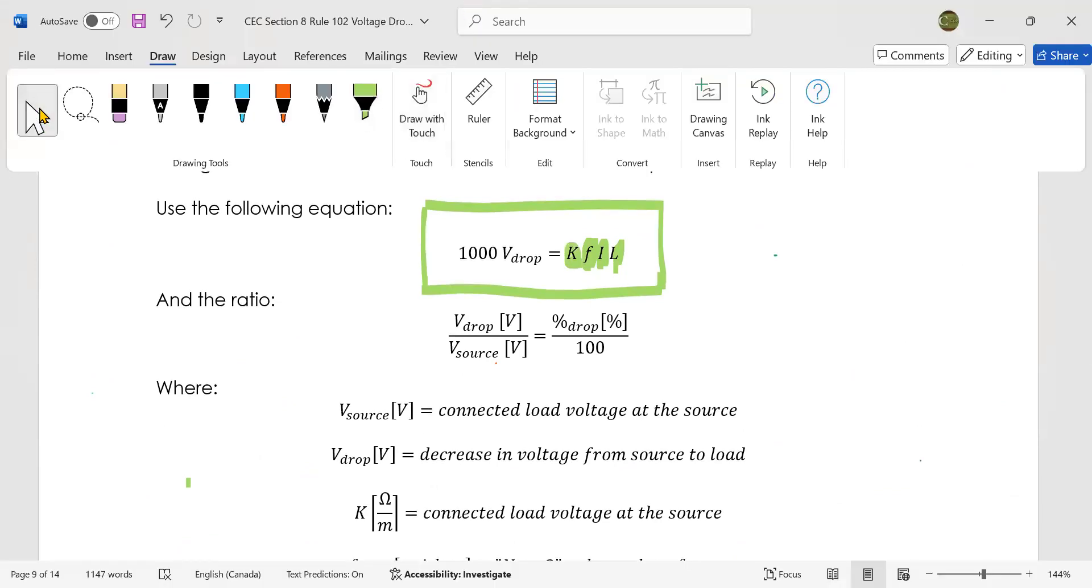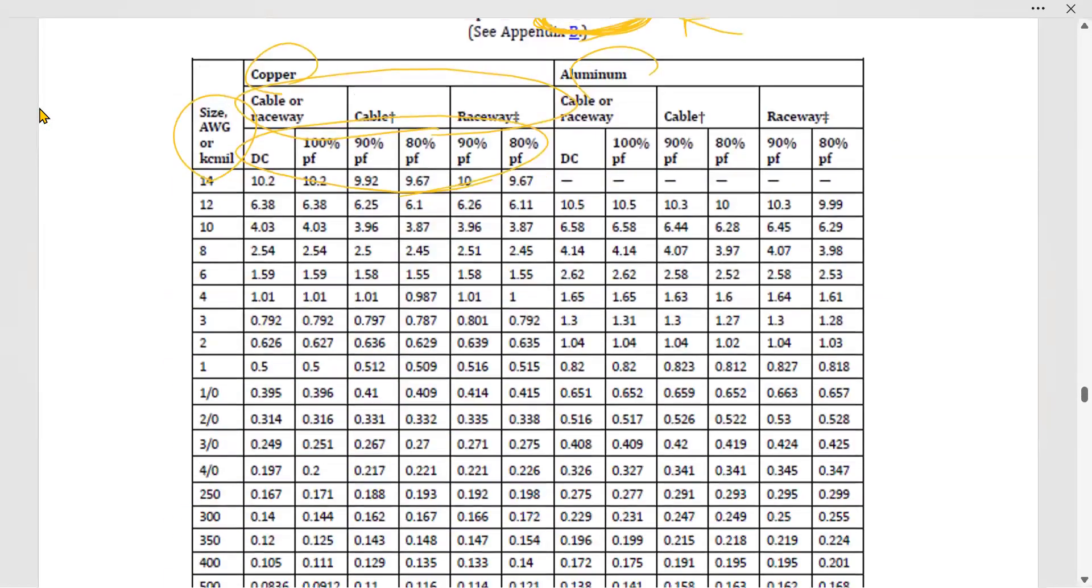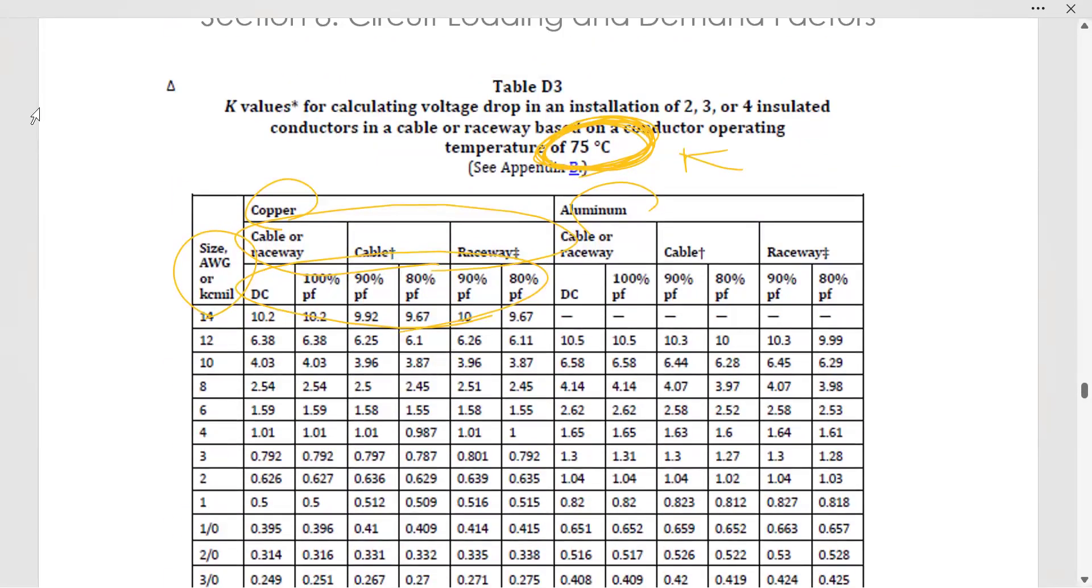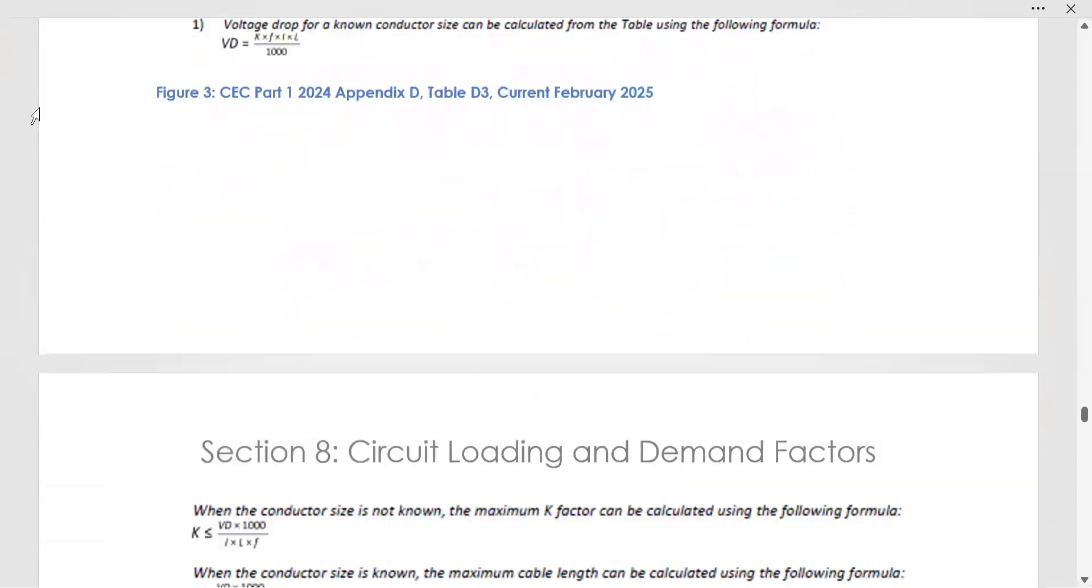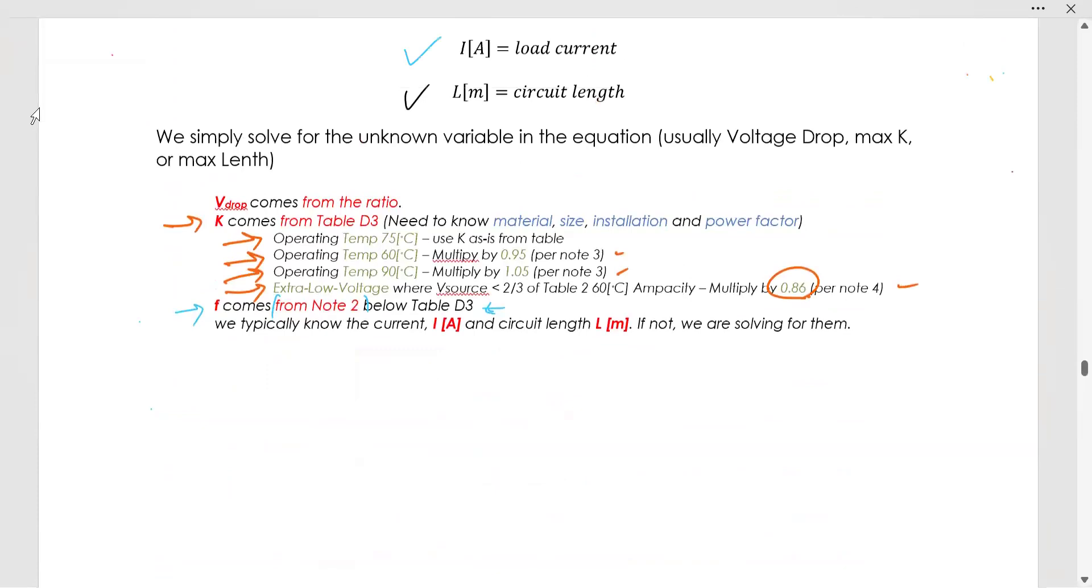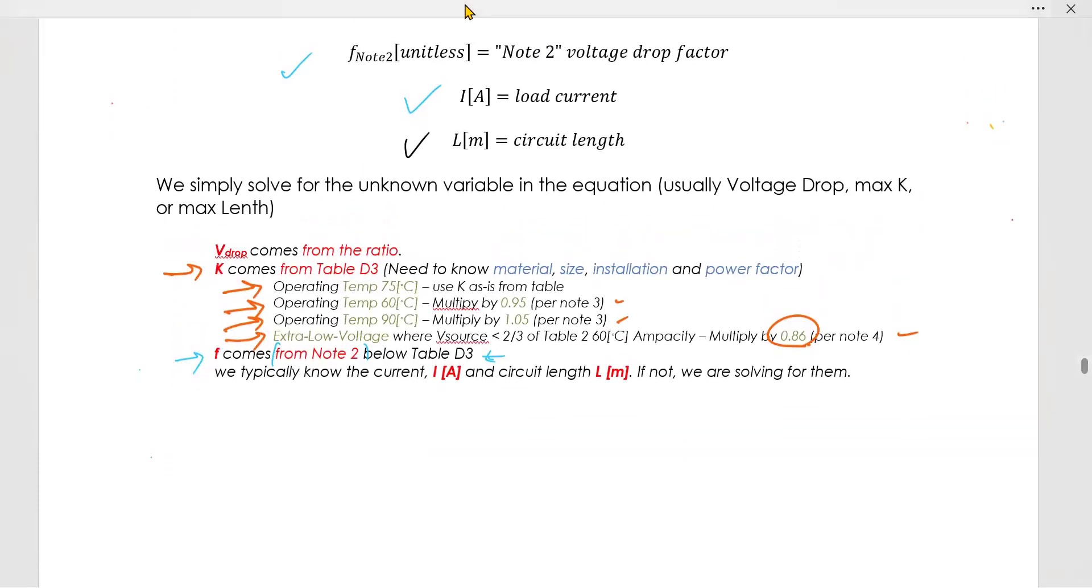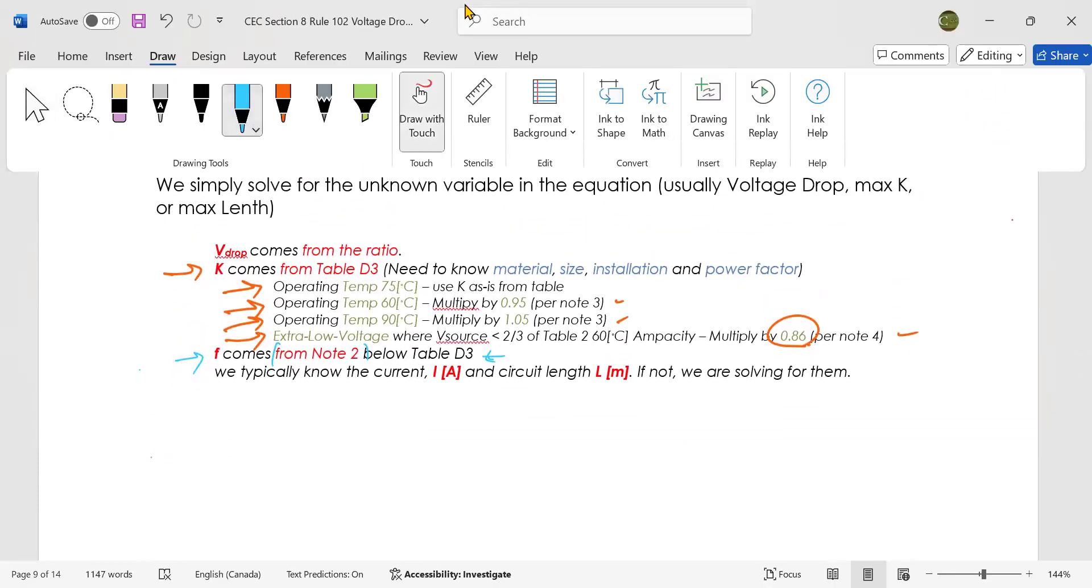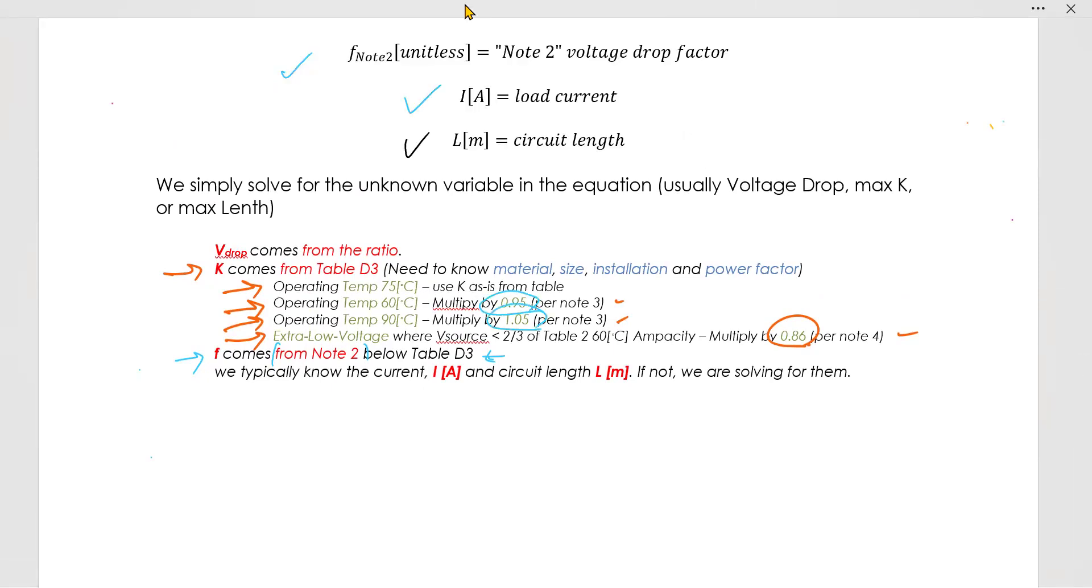F is either going to be 2 or 1.73 depending on the type of system you are calculating. K is a factor that comes from a table. The table looks like this. The table is set at 75 degrees, so you can use these values if you're at 75 degrees. If you're not at 75 degrees, then you are going to multiply that K value by 0.95 or 1.05 or 0.86.